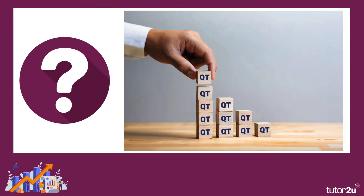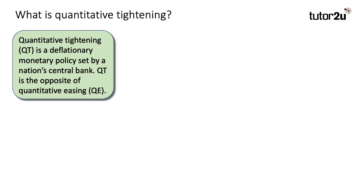Many students will have studied quantitative easing, or QE, as part of their study of monetary policy. Quantitative tightening is the reverse of QE. It's a deflationary monetary policy set out by a nation's central bank — the Bank of England, for example, or the Federal Reserve in the United States. QT, quantitative tightening, is the opposite of quantitative easing.